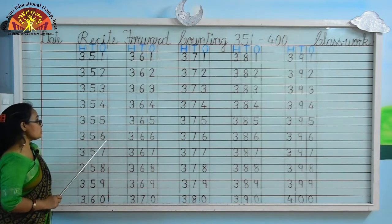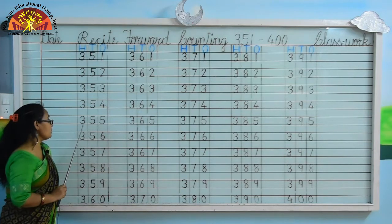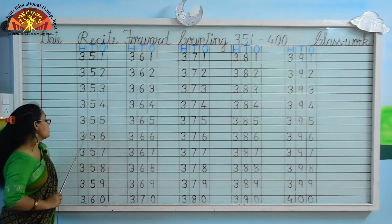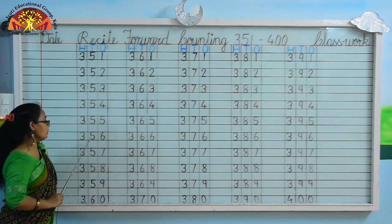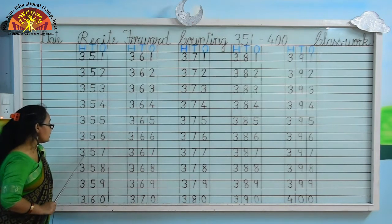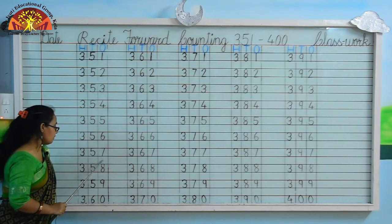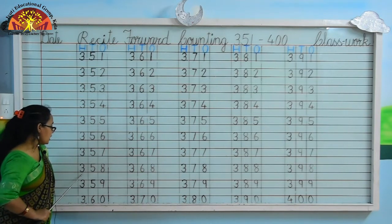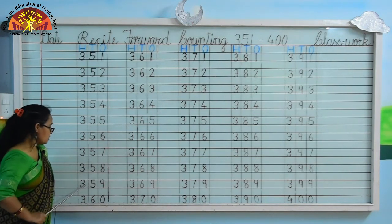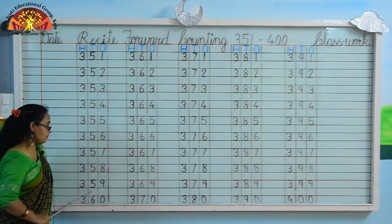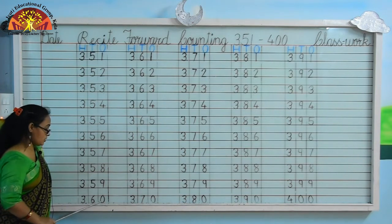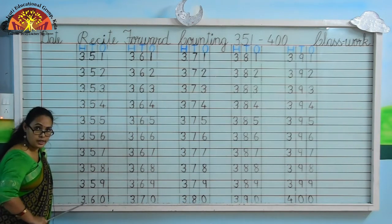Kids, what comes after 355? Yes, 356. Kids: 357, 358, 359, 360.